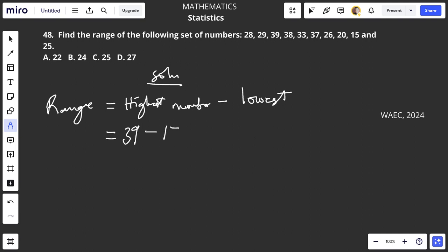The range simply means the difference between the highest and the lowest value. You want to see how stretched the data is. So if you do 39 minus 15, 9 minus 5 is 4...